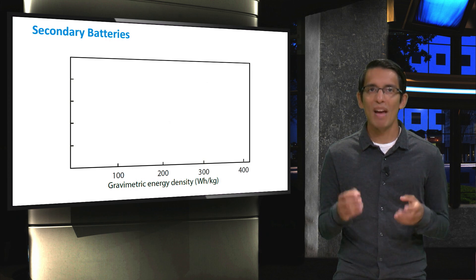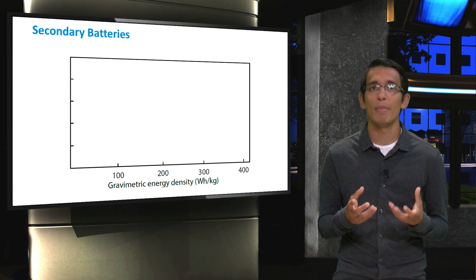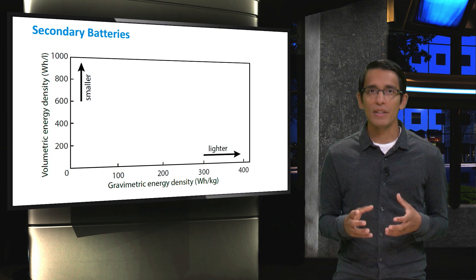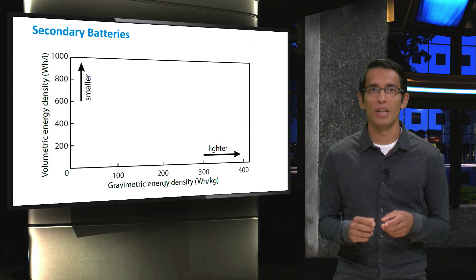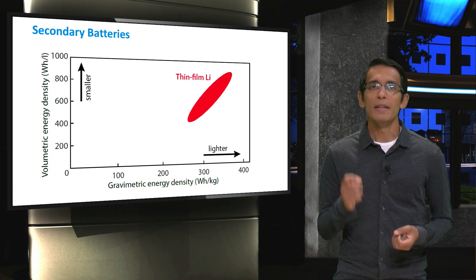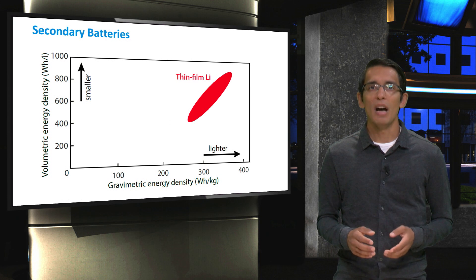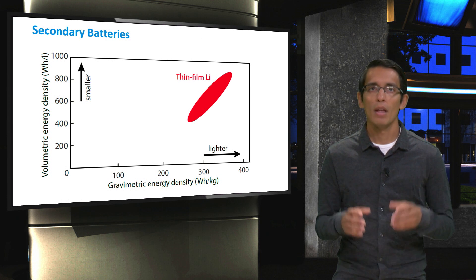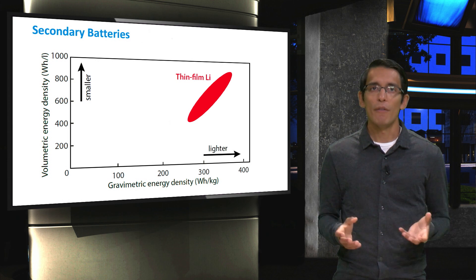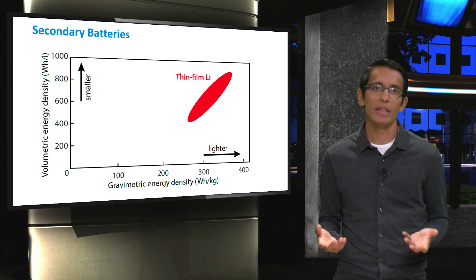Here on the x-axis, we have the gravimetric energy density, or the amount of energy per kilogram of a battery. On the y-axis, we have the volumetric energy density, or the amount of energy per liter of a battery. Ideally, battery technologies want to be light and small, so further to the upper right on this plot, the better. However, the smaller and lighter a battery becomes, the more expensive it gets.